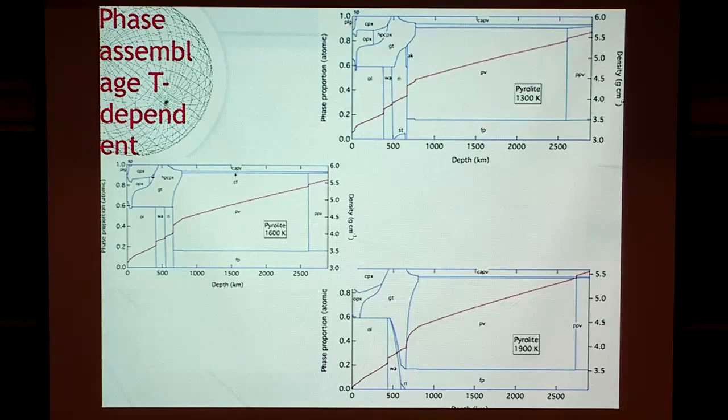Some figures were prepared last night at 11 pm. This is a phase diagram along the 1600 K potential temperature isentrope.